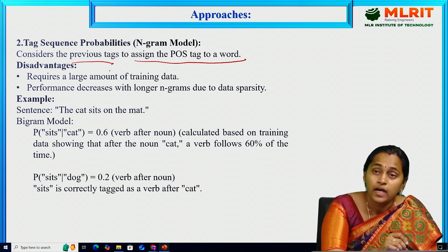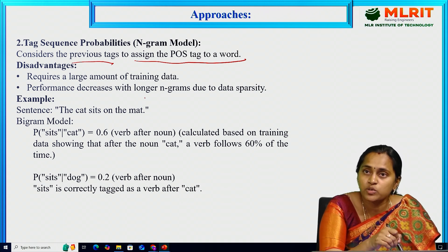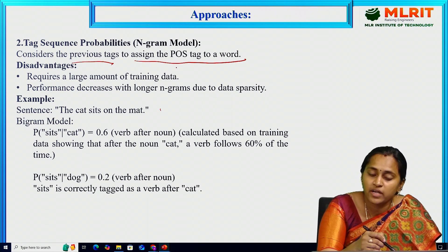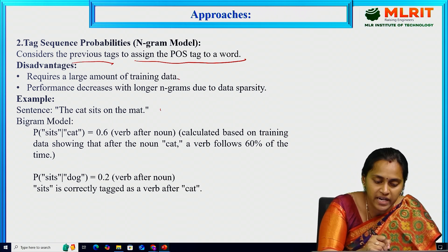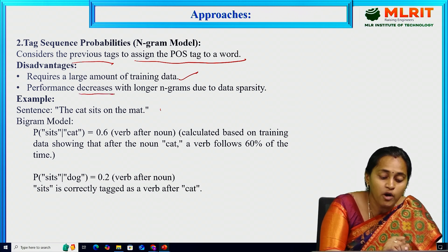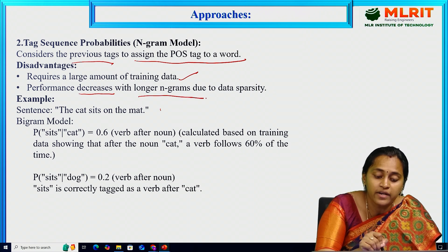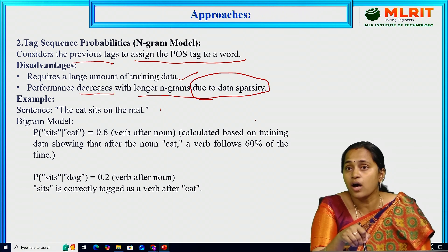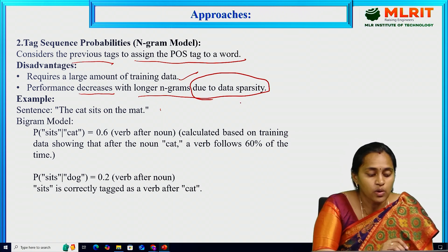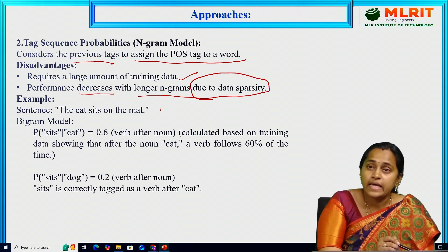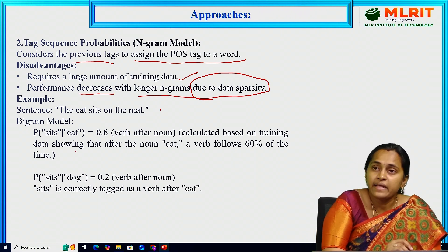There is also a disadvantage in the tag sequence probabilities approach. We require a large amount of training data — this is the first drawback. Performance may decrease due to long n-gram models and data sparsity, because we are training on large amounts of data. This decreases the overall performance of the system.